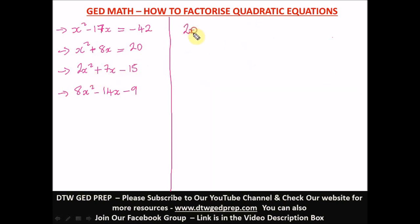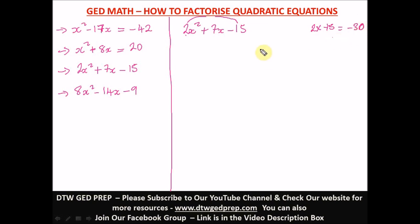Now this question: we have 2x-squared plus 7x minus 15. When the x-squared term has a coefficient, the first step is to multiply the coefficient by the constant — so 2 times negative 15 gives us negative 30. It is this negative 30 for which we find the factors.